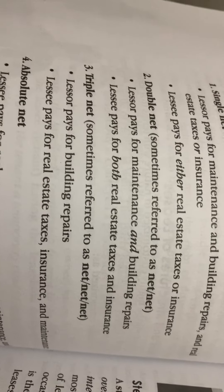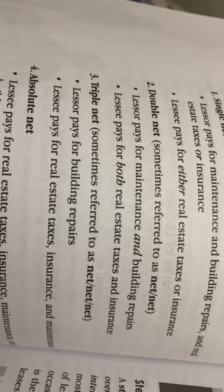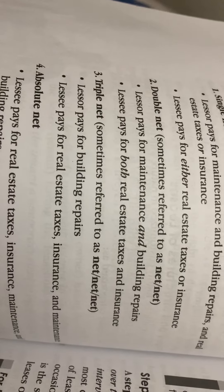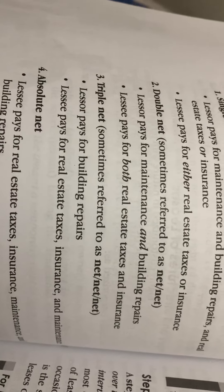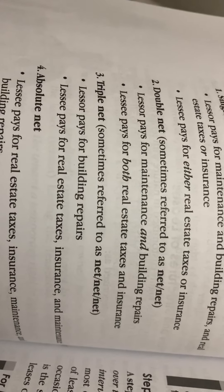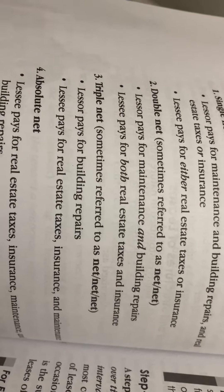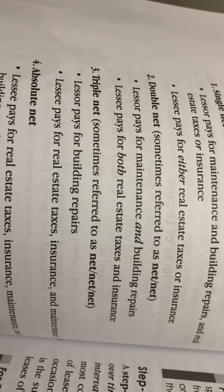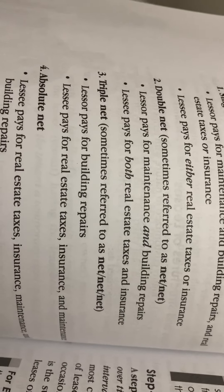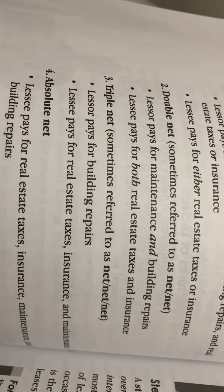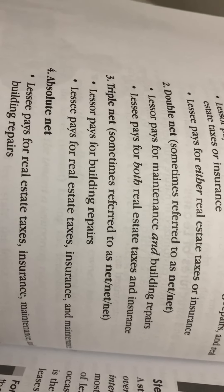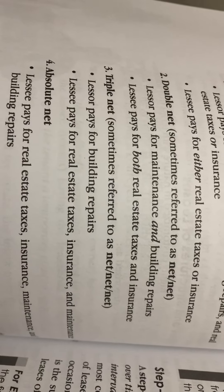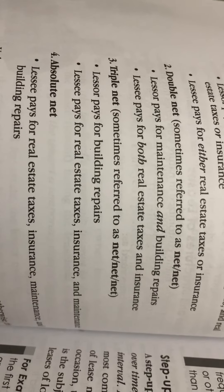Two, double net — sometimes referred to as net/net. The lessor pays for maintenance and building repairs. The lessee pays for both real estate taxes and insurance.